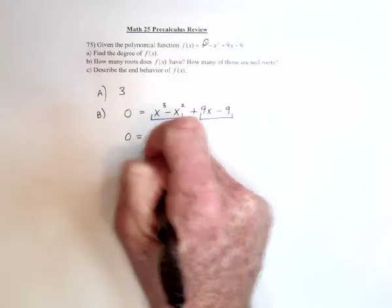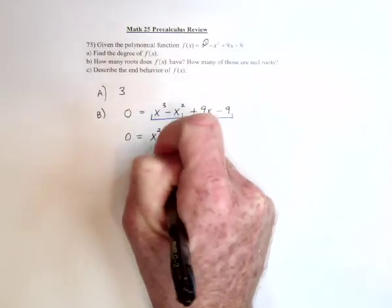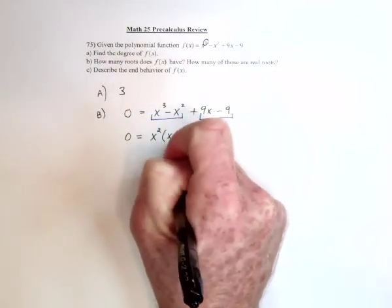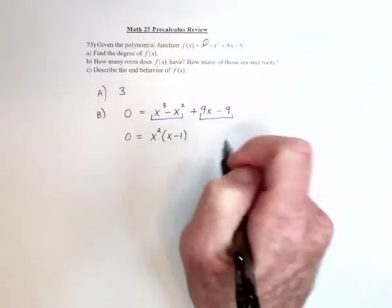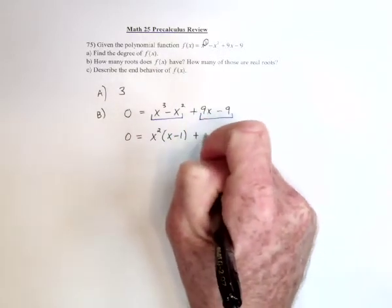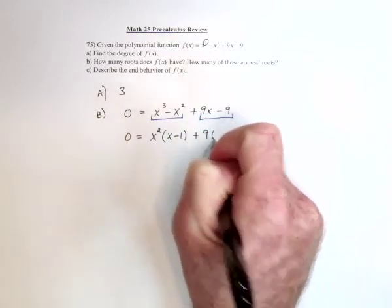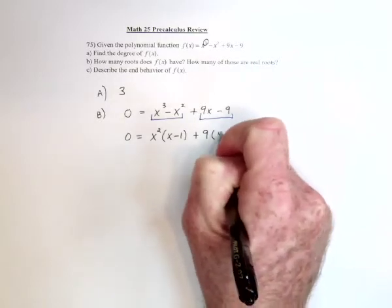So from the first pair, it's possible to factor out an x squared. It would leave behind x minus 1. From the second pair, it's possible to factor out a 9. And that would leave behind x minus 1.